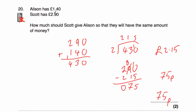Another way to do this question: take the difference between the two amounts — £2.90 minus £1.40 equals £1.50. He's got £1.50 more than her. Halve that to get 75p — that's how much money he'd have to give her. Half of the difference.